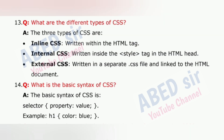Question 13: What are the different types of CSS? The three types of CSS are: inline CSS, written within the HTML tag; internal CSS, written inside the style tag in the HTML head; and external CSS, written in a separate .css file and linked to the HTML document.